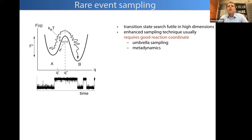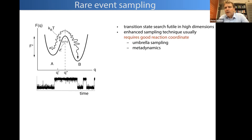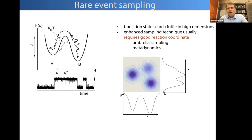For high-dimensional systems as in biomolecular systems, the transition state search is difficult because there are too many transition states. You usually need some sort of enhanced sampling technique to bring you from A to B without waiting too long. The way to do that is to define a reasonably good reaction coordinate using collective variables and then do enhanced sampling — umbrella sampling, and most famous in this community, metadynamics.